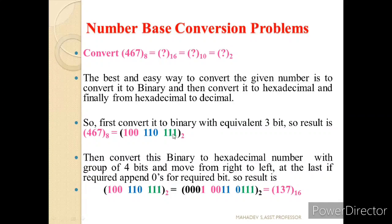Similarly, we convert this binary to hexadecimal by making groups of four bits, moving from right to left. Grouping gives us 0111, then 0011, and since the last remaining bit is 1, we append three zeros. So the groups are 0001, 0011, 0111 — representing 1, 3, 7. The final result is 137 in hexadecimal.